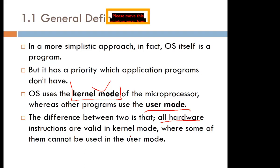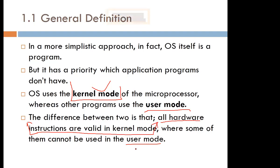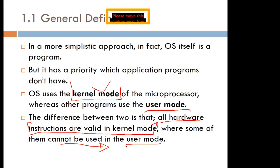The difference between kernel mode and user mode is that in kernel mode, hardware-specific or machine language instructions are valid. When you go to user mode, some of those instructions will not be valid. So kernel mode is specific to the microprocessor and hardware, while user mode takes care of the requirements of the user.